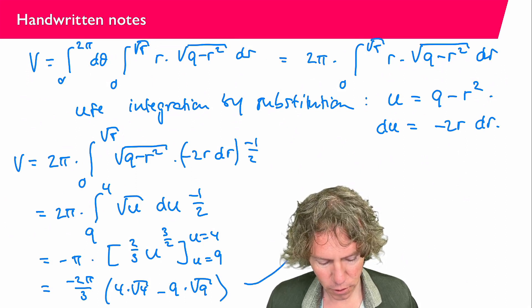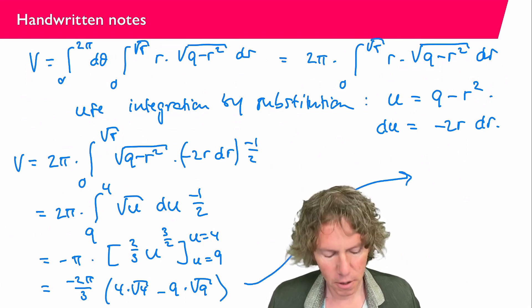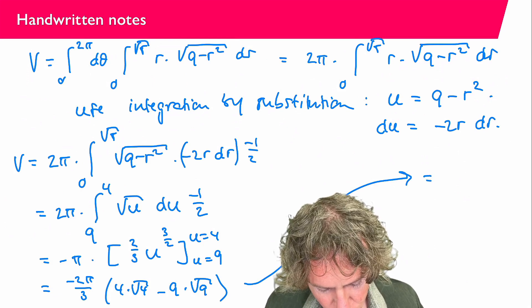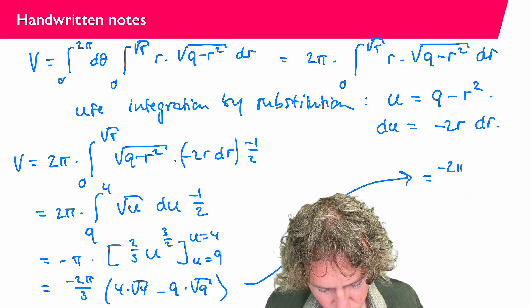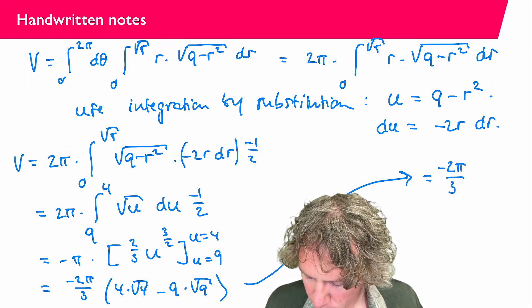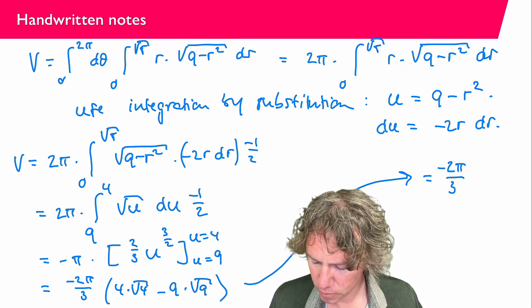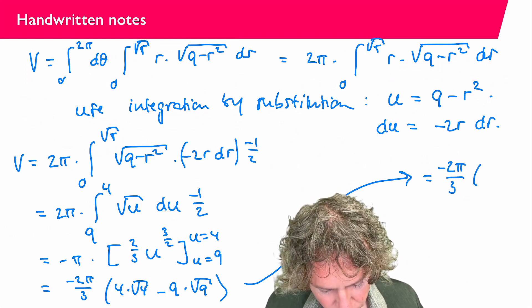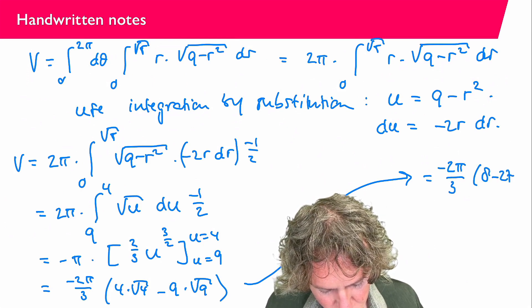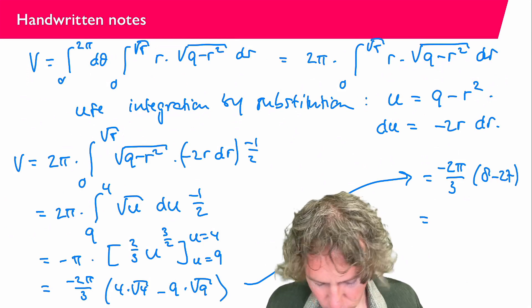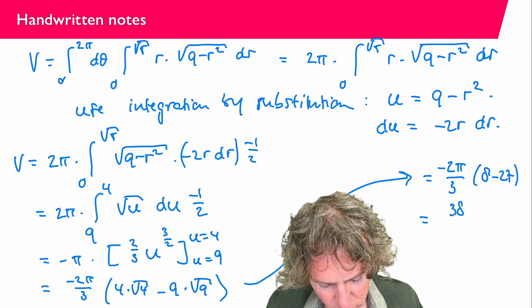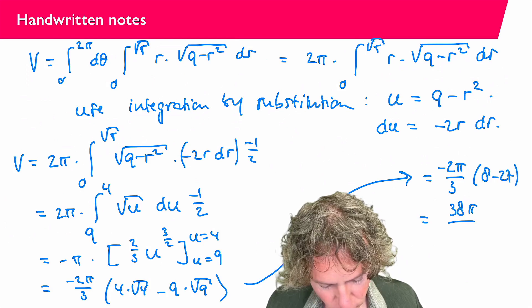And if you compute this. Let us continue here on this side. Equals minus 2 pi over 3. times 8 minus 27. And altogether that gives 38 pi over 3.